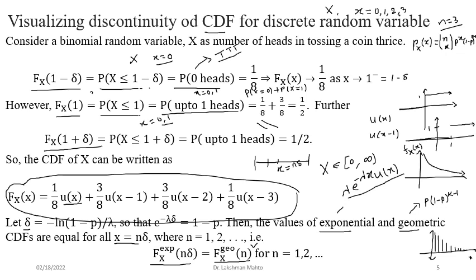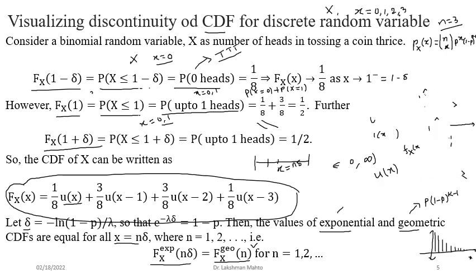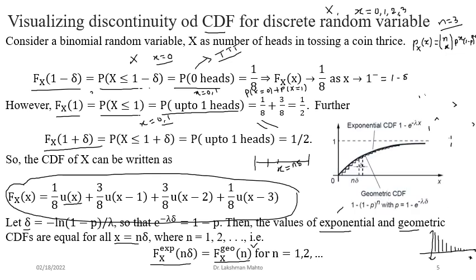In a plot, you can see the continuous curve representing the CDF of the exponential random variable, and the step-function pattern representing the CDF of the geometric random variable. This shows that if the CDF of the exponential random variable is given, you can easily find the CDF of the geometric random variable from it. This relation can be clearly visualized in the plot.